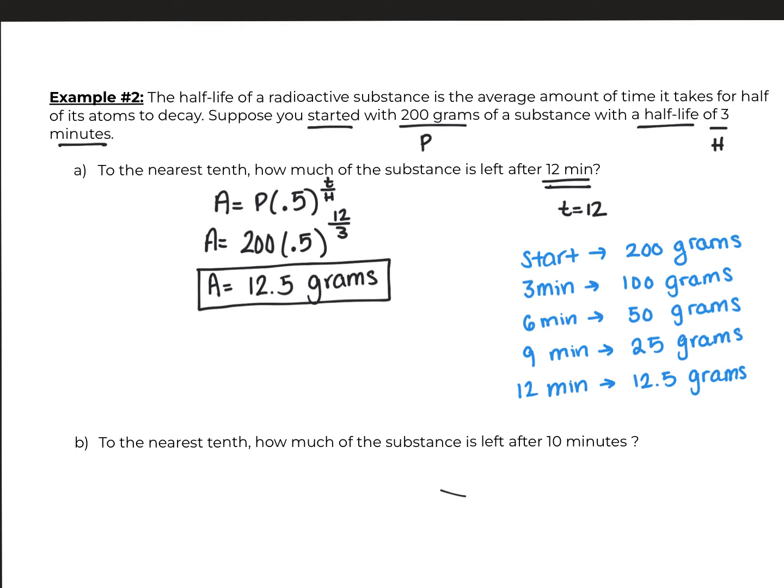This is a perfect example of something that you can do by hand. And why? Because 12 is a multiple of your half-life, which is three minutes.